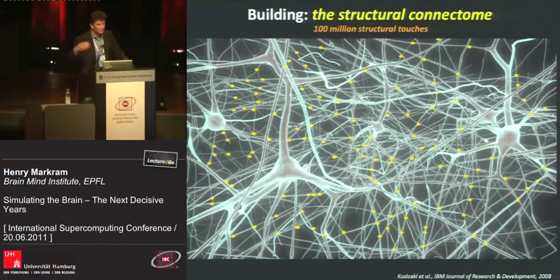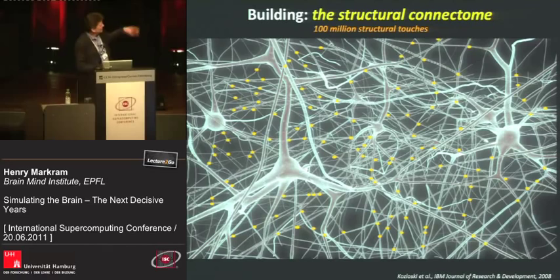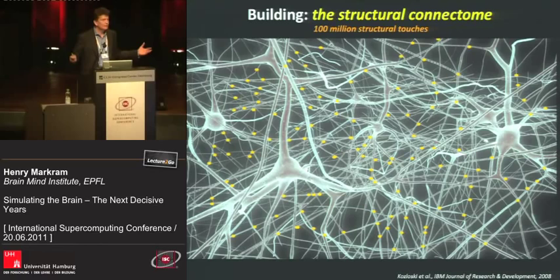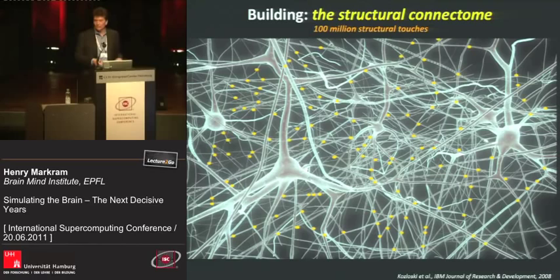We then didn't know if the positions were correct. We analyzed the statistical positions of all these different types of synapses and discovered we didn't have to do anything. We thought we were going to have to spin, rotate, and juggle these neurons together, but about 98% fitted the experimental data. Biology had solved the magical solution for creating massive connectivity by just randomly throwing these branches together — you throw them in a bucket, look where they touch, and that is what biology is actually doing.